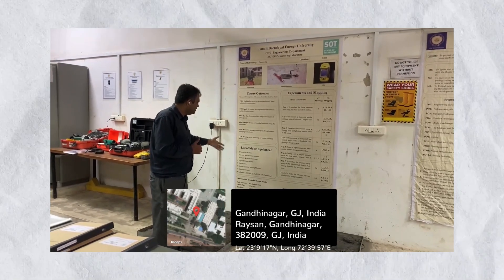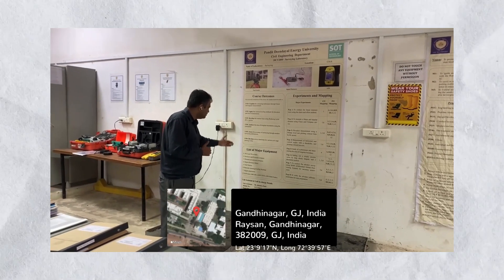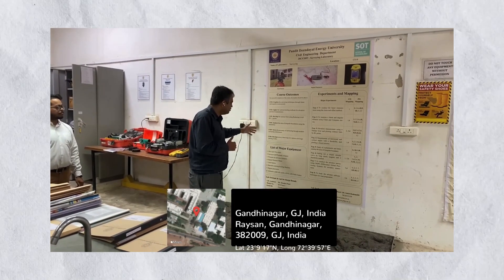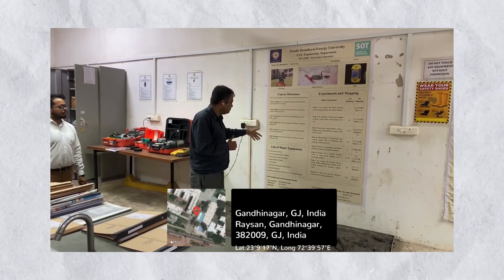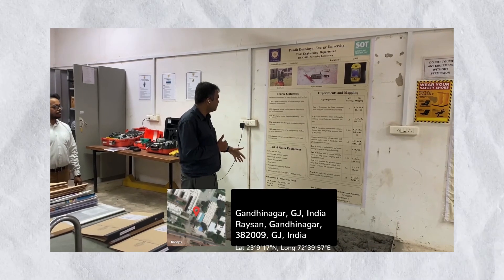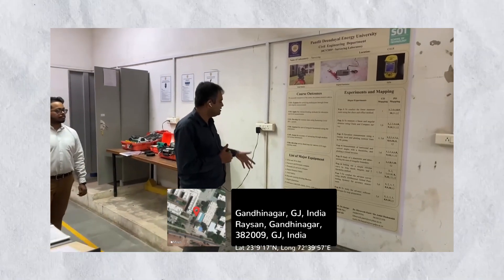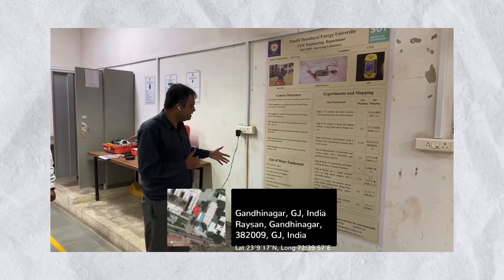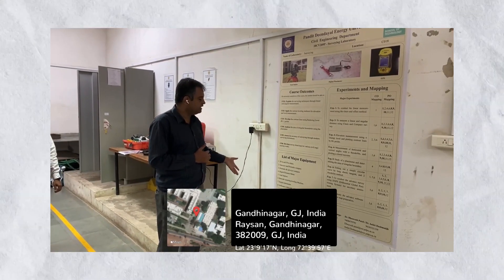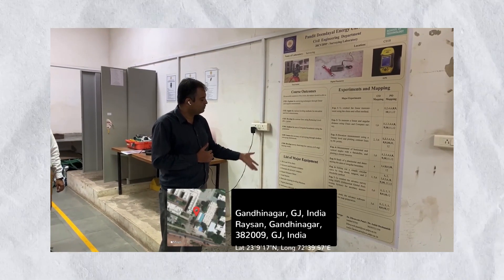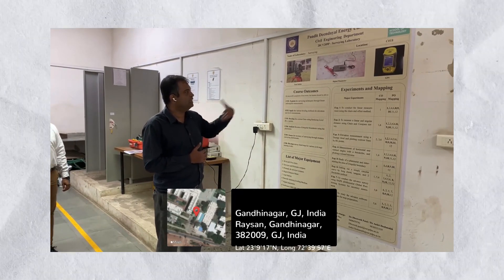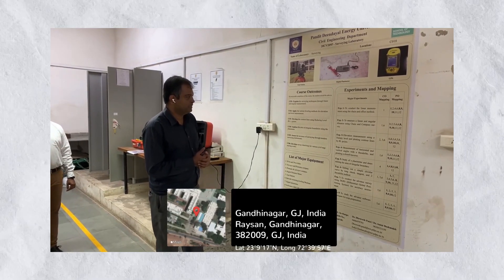The list of major equipment consists of a range from very common equipment — right from chain, compass, and surveyor's compass — to advanced level equipment like total stations, DGPS (differential GPS), digital planimeter. The lab is also equipped with ArcGIS, QGIS, and other highly sophisticated software.